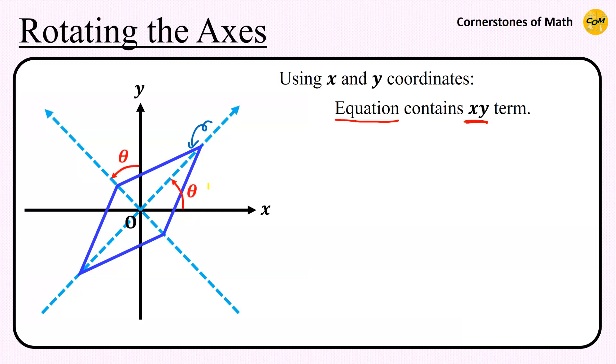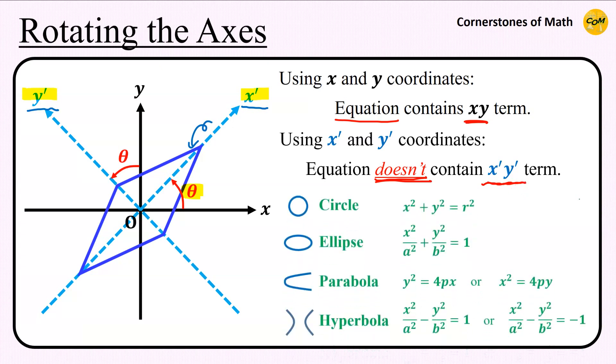Then, consider rotating the x and y-axis by angle theta counterclockwise to construct new axes. Let us call them x prime and y prime axes. This means that we can construct another coordinate system now having x prime and y prime coordinates. And suppose that under the new coordinate system, the equation of the conic section does not contain xy term, or in this case, x prime y prime term.